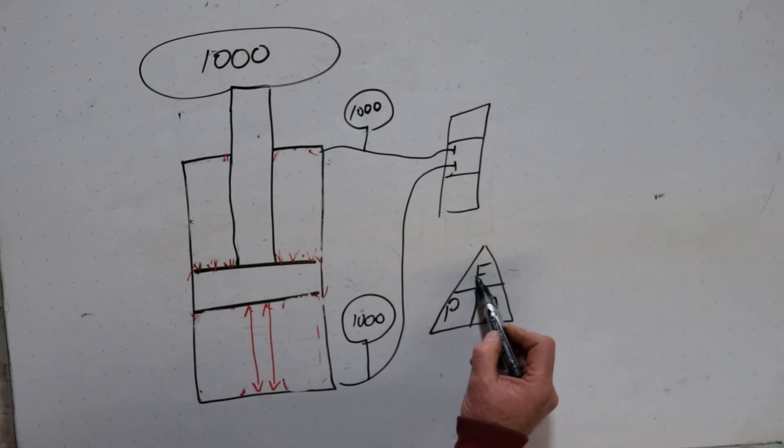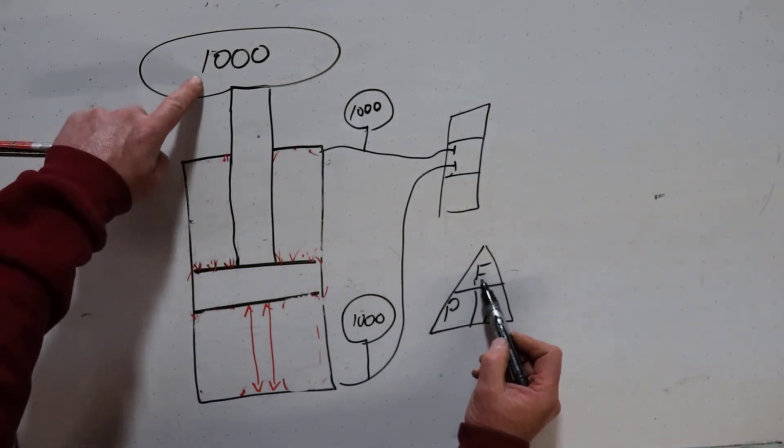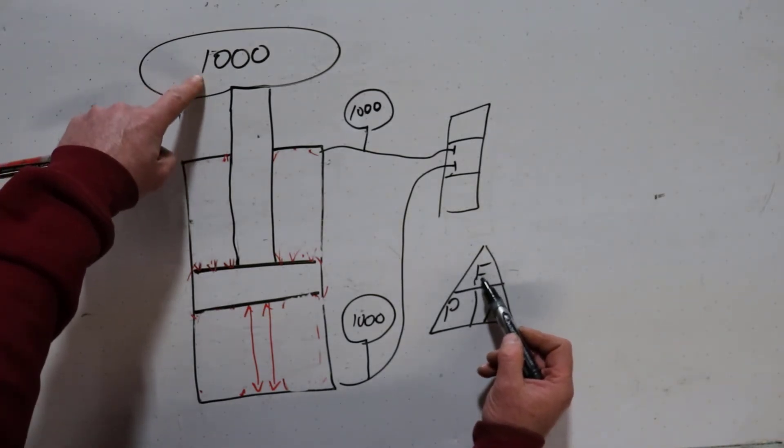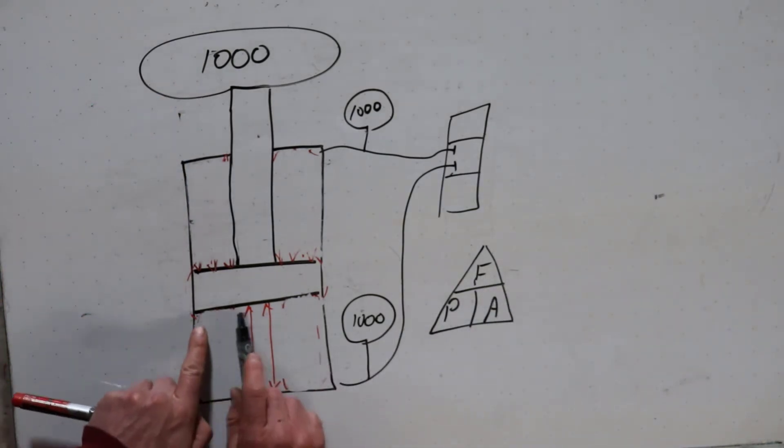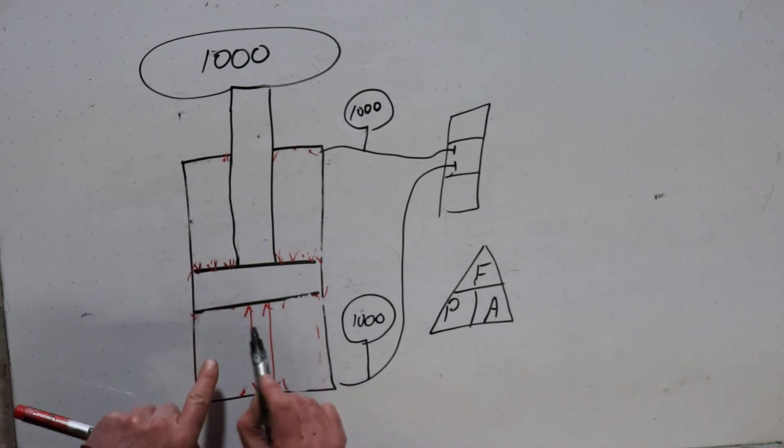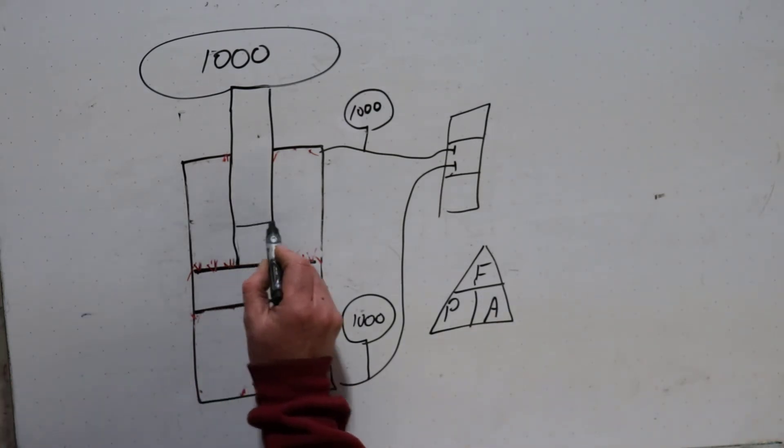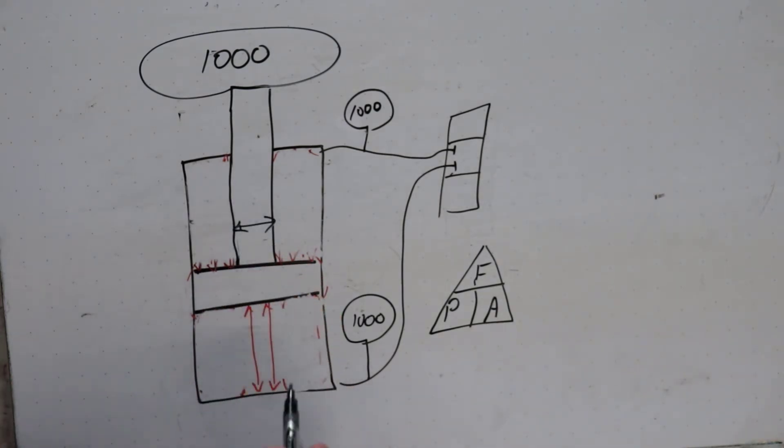The force, the thousand, hasn't changed. Whatever this force is, our load hasn't changed. The area that was pushing up across the whole side of the piston is now limited to the area of only the rod. So our areas got a lot smaller.